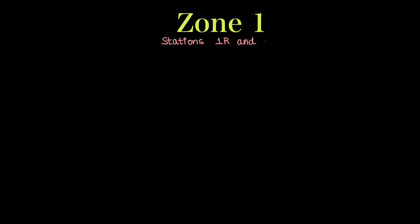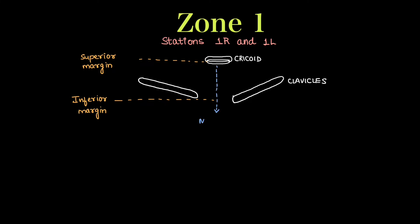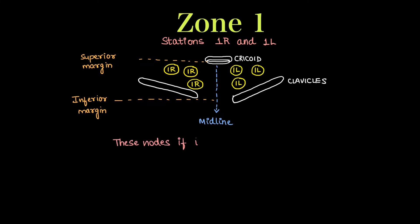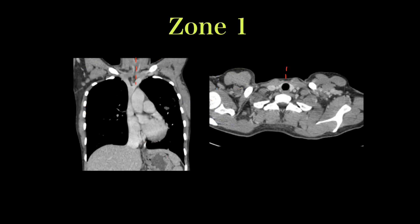Zone 1 has just one station — one right and one left. The upper margin of zone 1 is the cricoid cartilage and the lower margin is the inferior margin of clavicles. A midline line divides it into right and left groups; all these are station 1 and are above the thoracic inlet. If these are involved in lung cancer, it is considered N3 disease. On coronal and axial CT images, right is labeled 1R and left 1L, with midline as the cutoff.